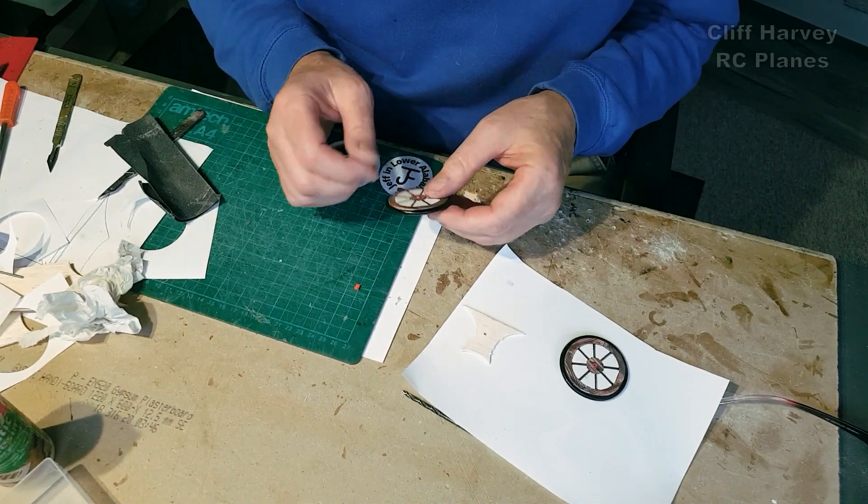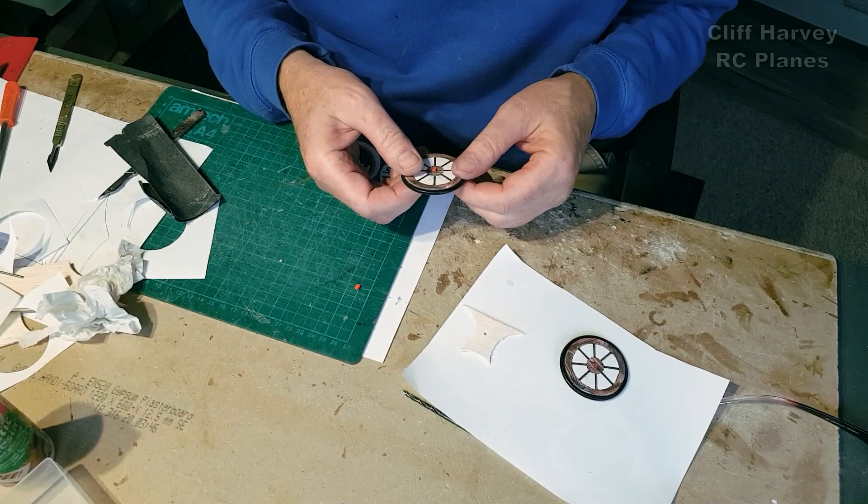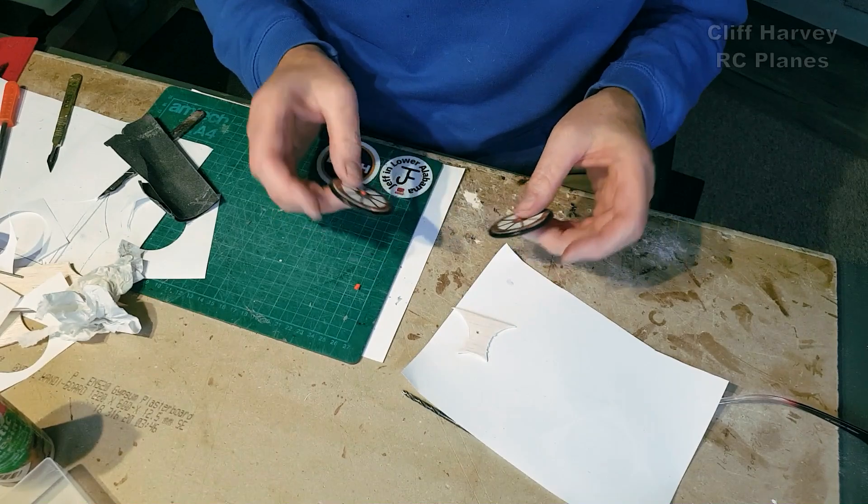So there we are, a little bit of CA to hold the tires and the axles are in. I'll just give them a quick fizz over with a bit of clear lacquer mat and then I can mount the wheels. That's what it's having.